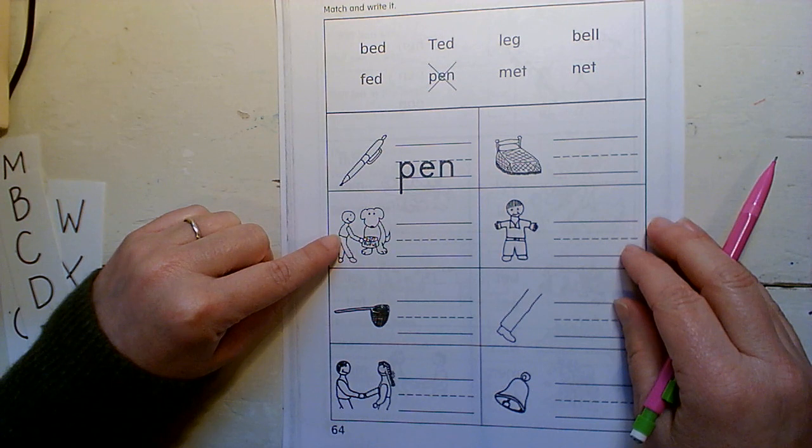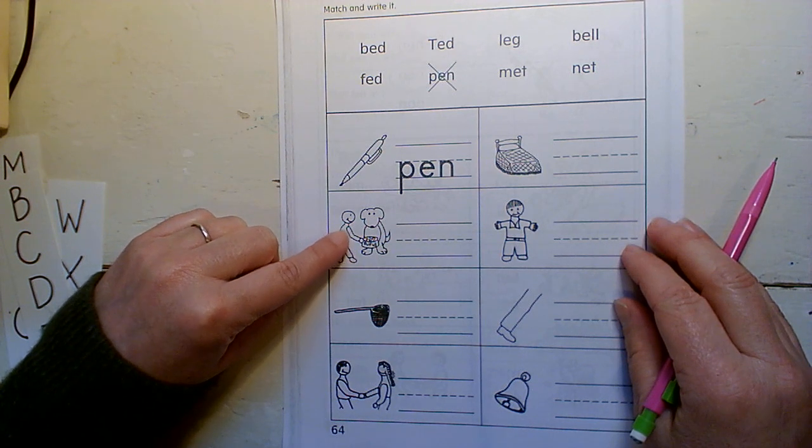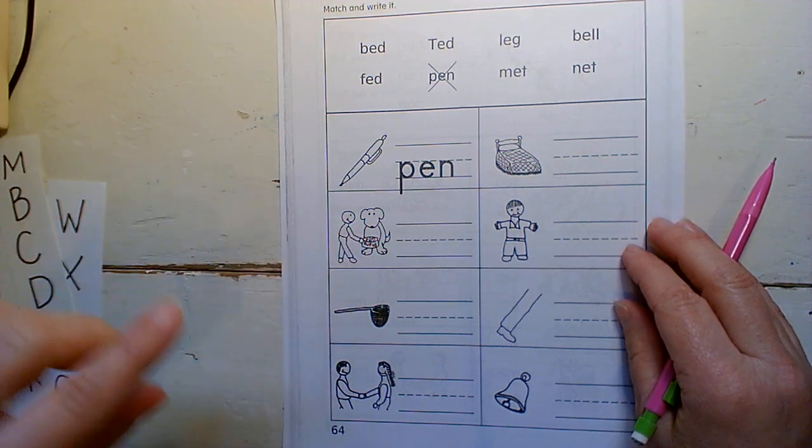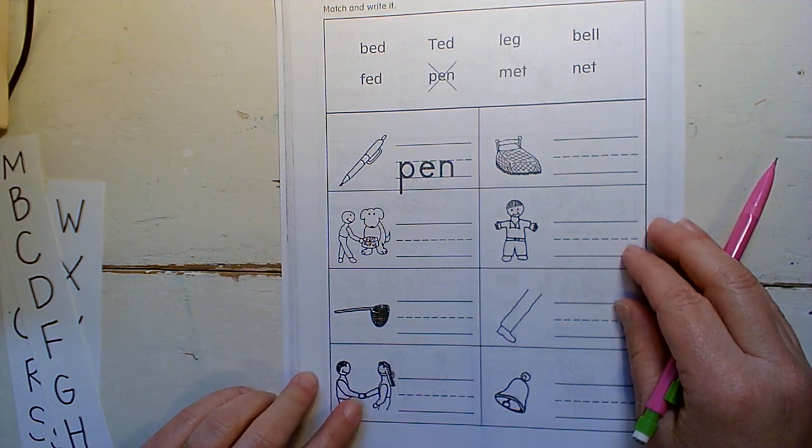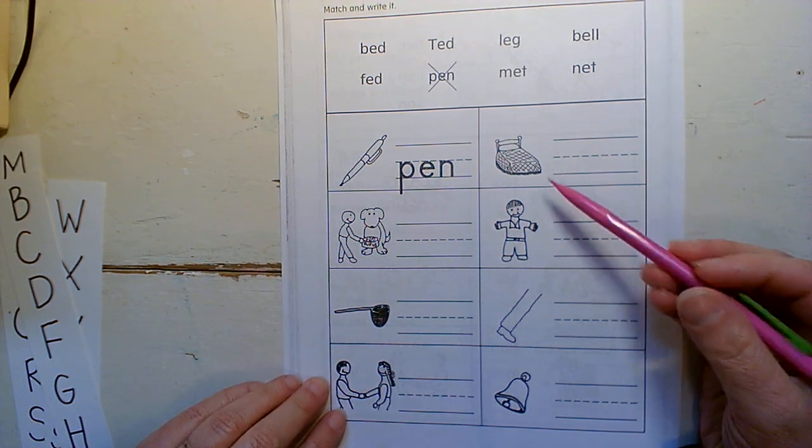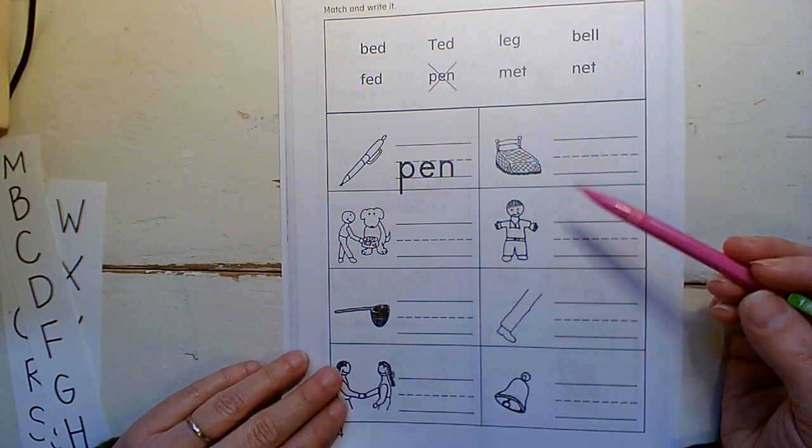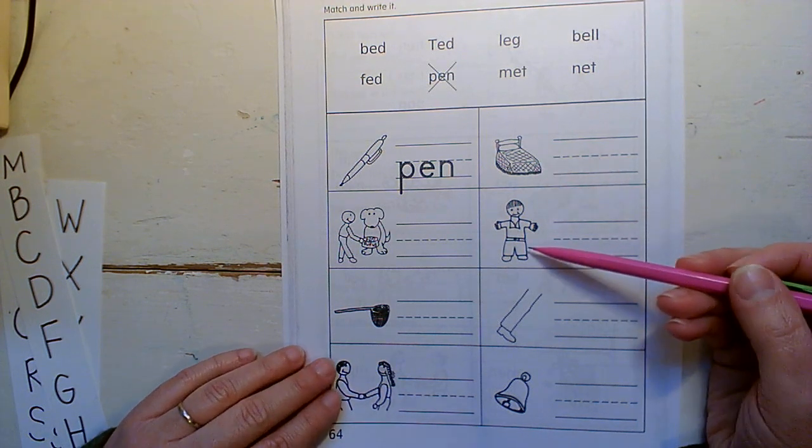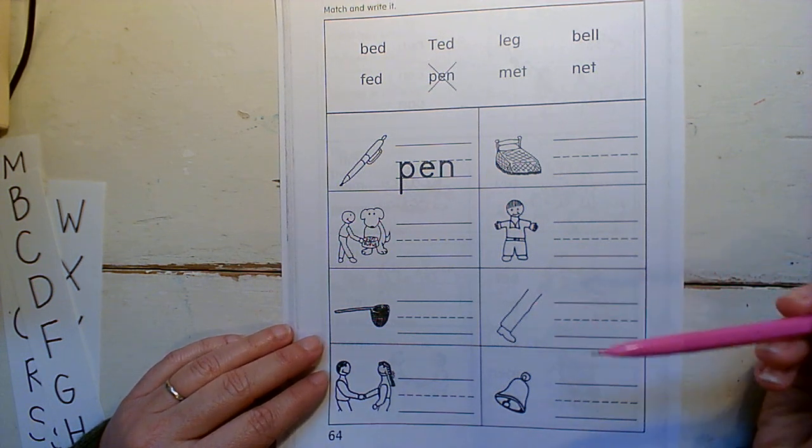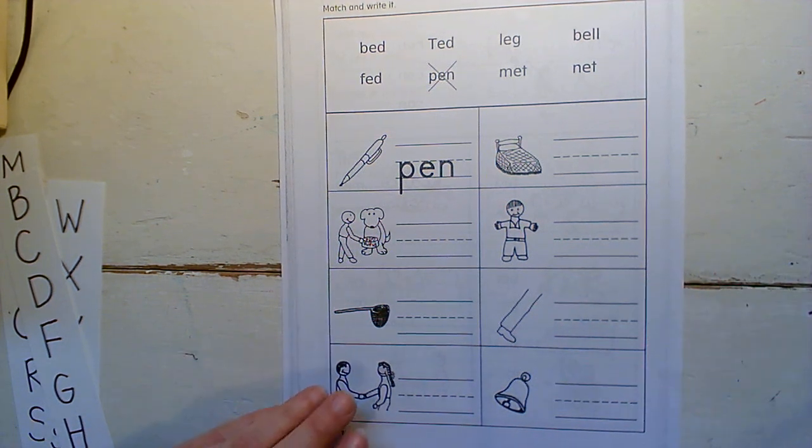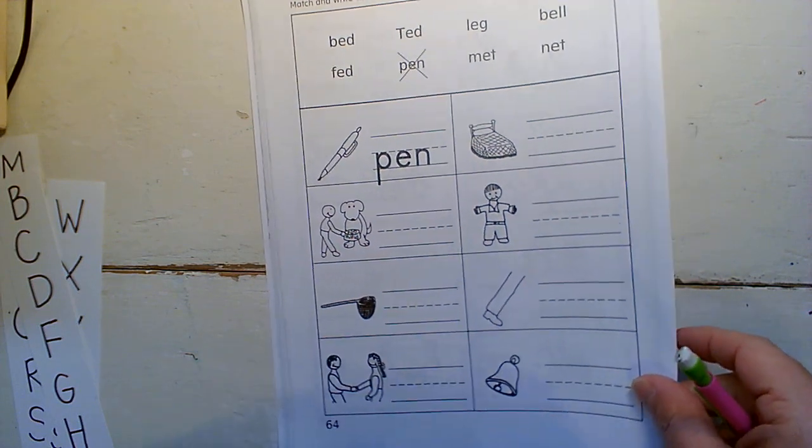So this is a pen. This is fed. He fed the dog. Net. Met. Like these people met. A bed. This is a person named Ted. Leg. And bell.